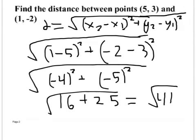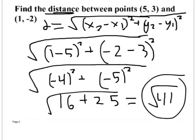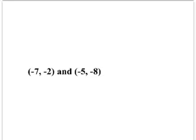So our answer is the square root of 41. We don't write plus or minus because distance can't be negative. We don't need a calculator — the square root of 41 gives approximately 6.4, but the exact answer, square root of 41, is preferred. Write this down.